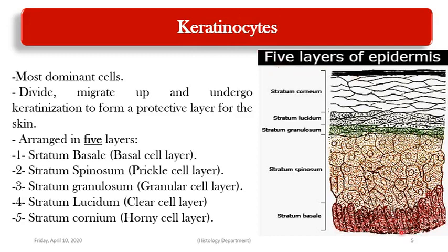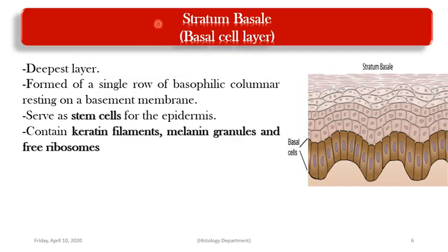The basal layer rests on the basement membrane and consists of a single layer of columnar cells called stratum basale. Then we have multiple polygonal cells called stratum spinosum. After that, cells start to be flattened and contain granules — the stratum granulosum, or granular cell layer. Then a few layers of translucent, refractile, acidophilic cells called stratum lucidum, and finally the fifth layer, the stratum corneum or horny cell layer.